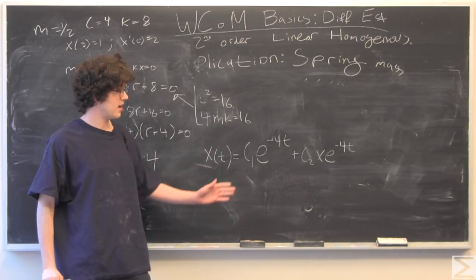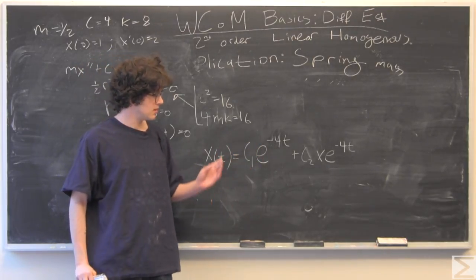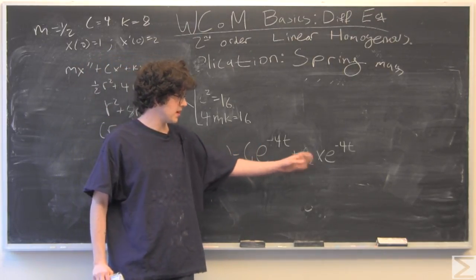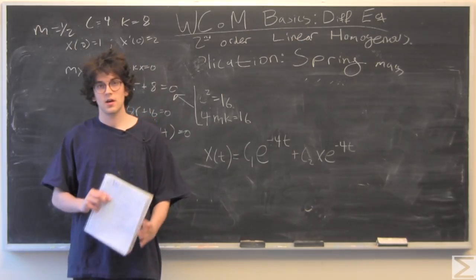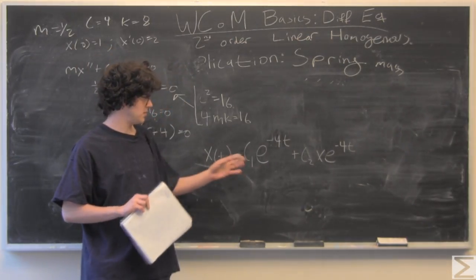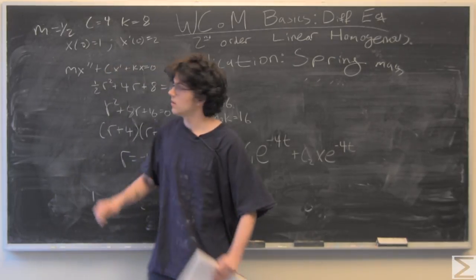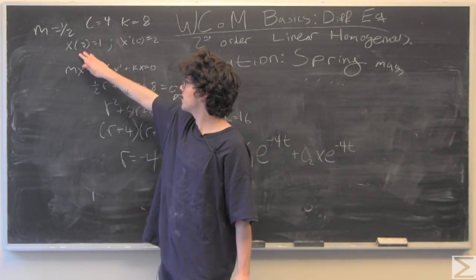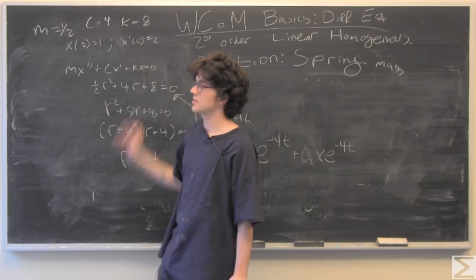So this gives us our position as a function of time is equal to c1 e to the minus 4t plus c2 times x times e to the minus 4t. At this point, you might want to plug in x0 and x prime of 0.